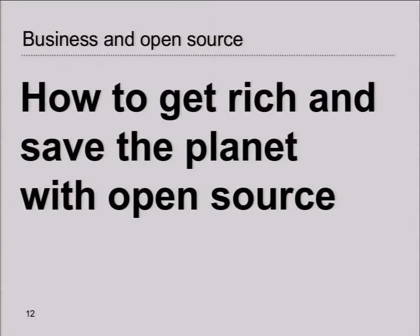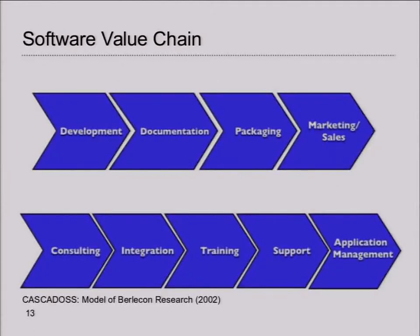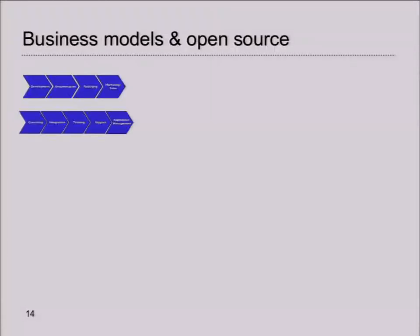So back to the question: how to get rich and save the planet with open source. Before we can delve into that, I want to tell some things about open source business models. This is a graphic design from Cascados, a European project. I'm just going to summarize for those who know how to do business with open source. This is the value model of a software chain, and there are different models that we can use.